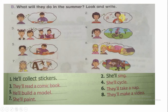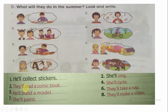She will sing. Number three: They will read a comic book. Number four: She will cycle. Number five: He will build a model. Number six: They will take a nap. Number seven: She will paint. Number eight: They will make a video. Finish this exercise.